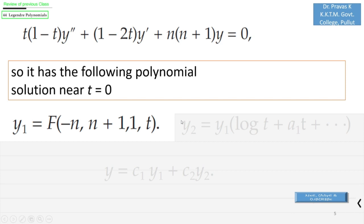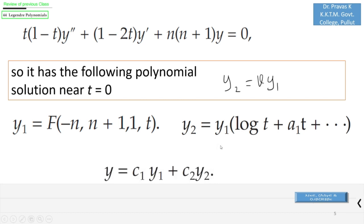Thus at t = 0, we could obtain the solution y₁ = F(-n, n+1, 1, t), and using a technique by putting y₂ = vy₁, we could obtain y₂ = y₁(log t + a₁t + ...). Now we have the general solution y = c₁y₁ + c₂y₂.